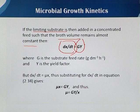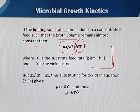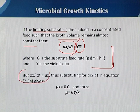If we are feeding in such a way that the volume remains constant, the change in biomass with respect to time is equal to the feeding strategy rate multiplied by the yield factor. Since we know that dx/dt equals μx, by substituting we can write the equation as μx = g·y.